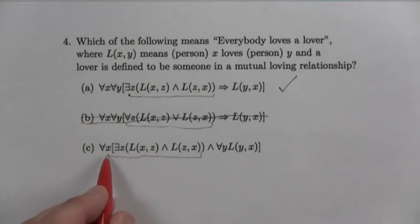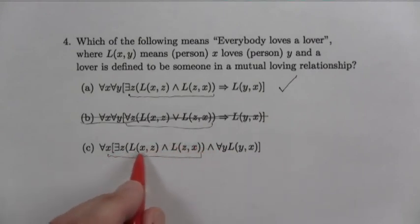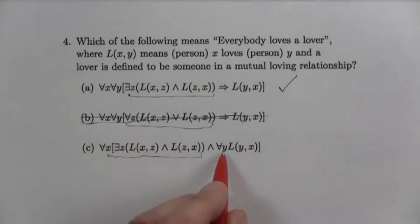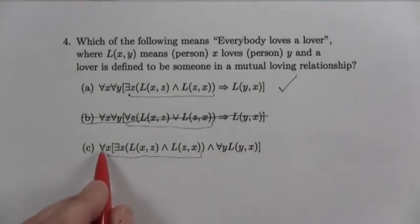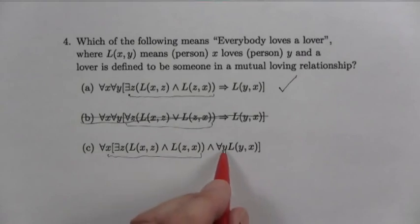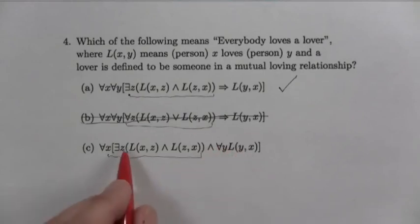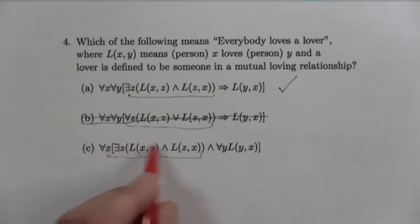Let's look at this one. This one is a little bit different because it's got the for all y in here. So it says for all x, if x is a lover, then, when it doesn't say then it says and, for all y, L(y,x). So the for all actually applies to this part as well. So what this really, what follows from this is that for all x and for all y, L(y,x). In other words, everybody loves everybody. Well, that's not the case.